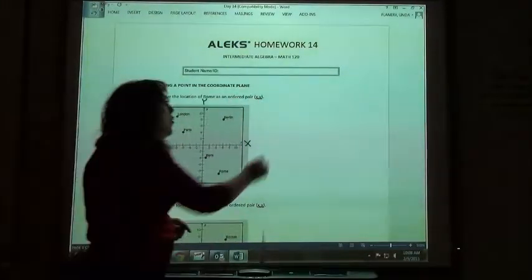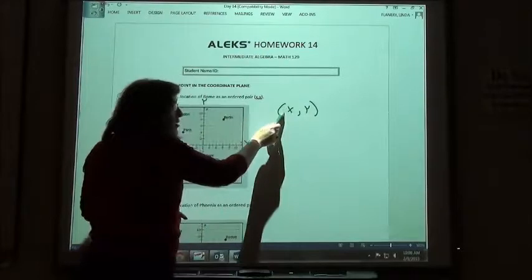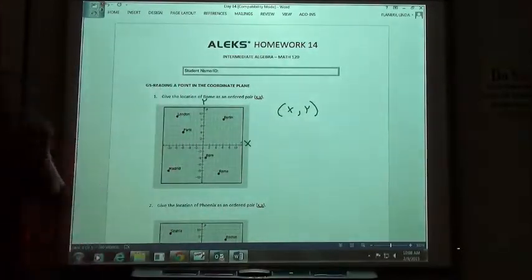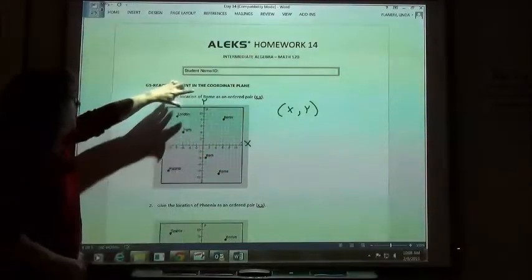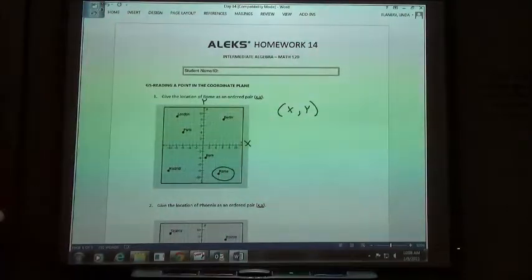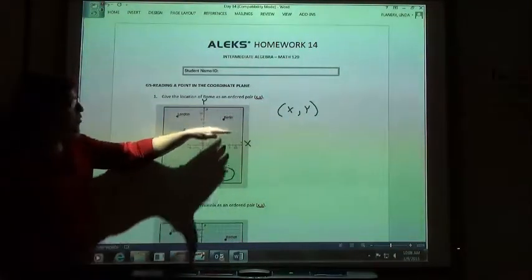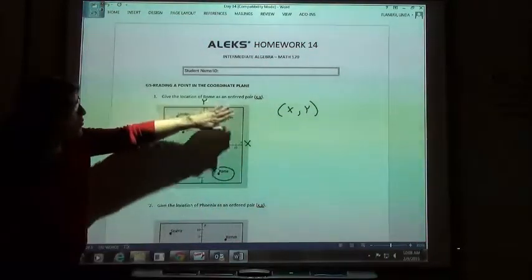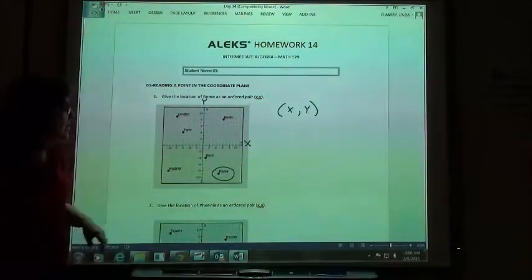When you have your ordered pair, or your coordinates, the x-direction is first, so you do the left or right first. The y-direction is second, so then the up or down. If I'm giving the location of Rome, Rome happens to be down there in what they call quadrant 4. The quadrants go counterclockwise: quadrant 1 is your two positive directions, and then 2, 3, 4.